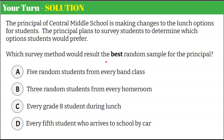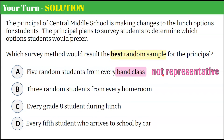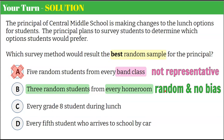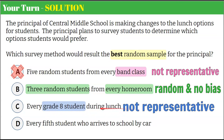Welcome back. We're looking for the best random sample. Option A is five random students from every band class. Band class is not representative of the entire population — it's a specific group, and not every student is in band or plays an instrument. We rule out A. Option C is every grade eight student during lunch — that's not representative of the whole school, just one grade. We eliminate C.